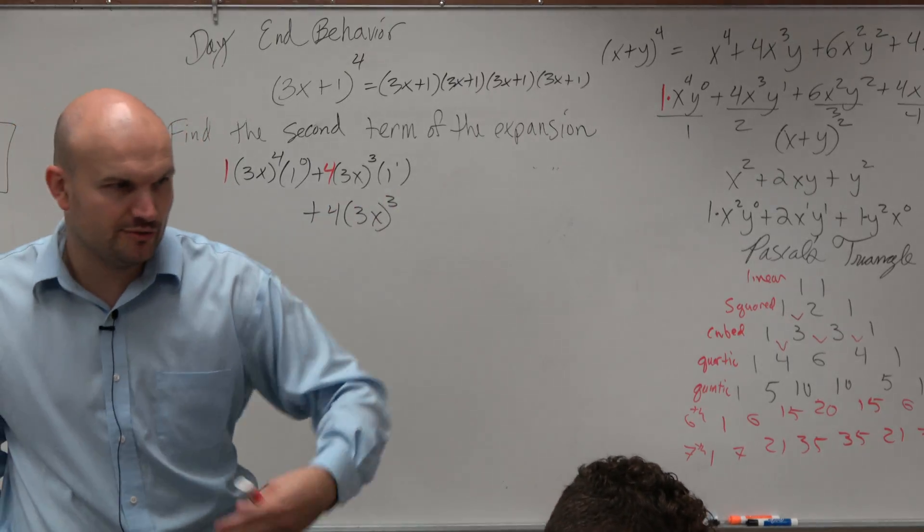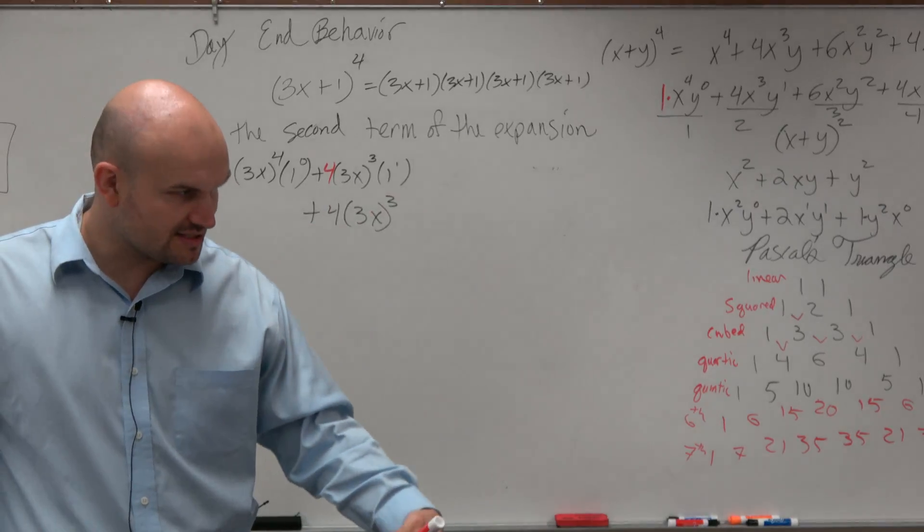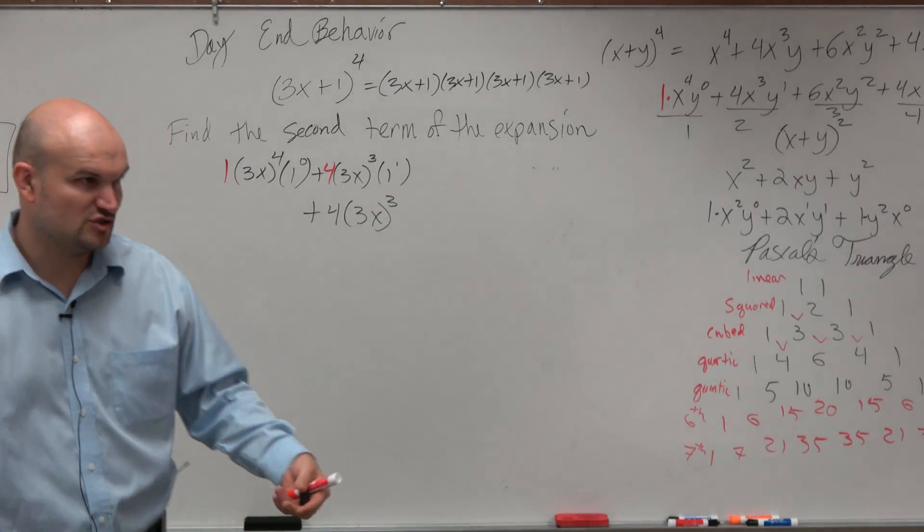Well, guys, what's 3x cubed? 3x times 3x times 3x is 27.